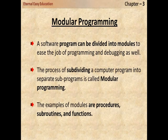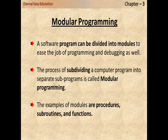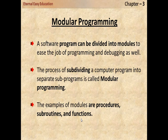What is modular programming? A software program can be divided into modules to ease the job of programming and debugging. The process of subdividing a computer program into separate sub-programs is called modular programming. Modular programming means subdividing the program into pieces — that is, sub-programs. Examples include procedures, subroutines, and functions. In programming languages, subroutines are termed as functions, and we have learned this in our first chapter.